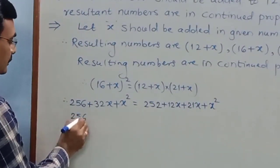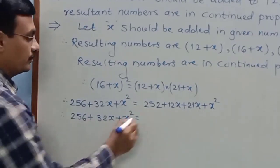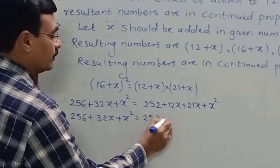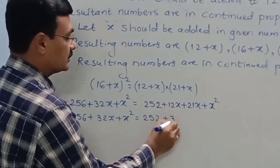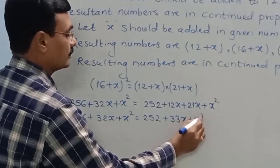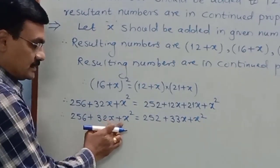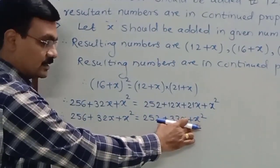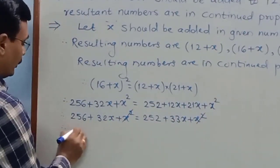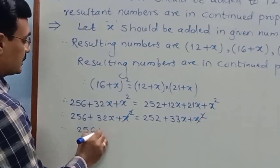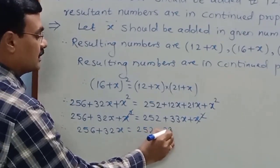So we have: 256 plus 32x plus x squared equals 252 plus 12x plus 21x plus x squared, which simplifies to 252 plus 33x plus x squared. The x squared term appears on both sides of the equal sign, so those two terms cancel each other. We are left with: 256 plus 32x equals 252 plus 33x.